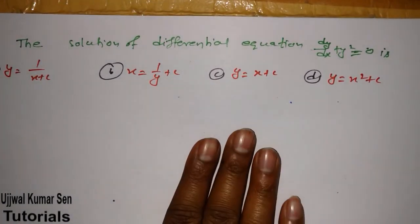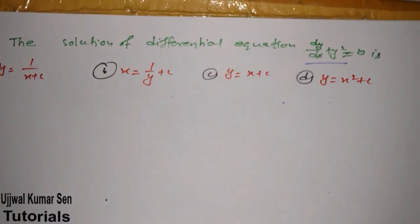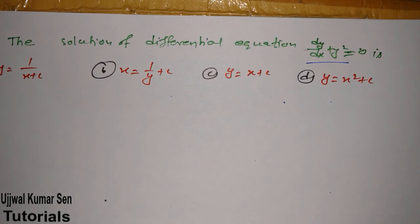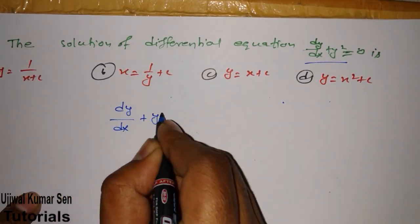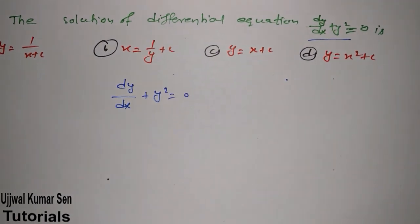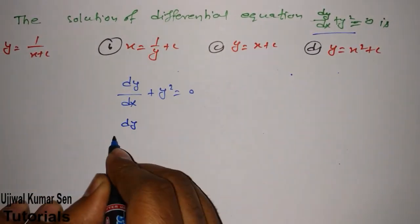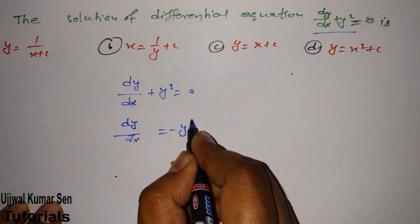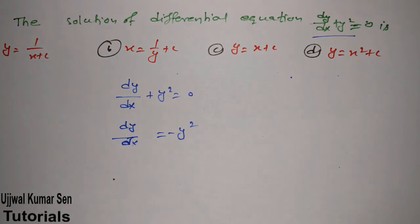Now for the next problem. We are given the differential equation dy/dx + y² = 0 and we have to find its solution using the variable separable concept. Rearranging: send y² to the other side to get dy/dx = -y².